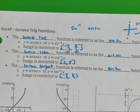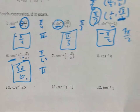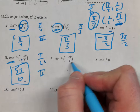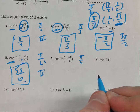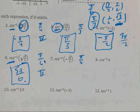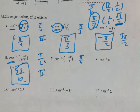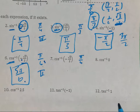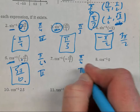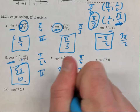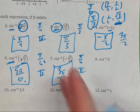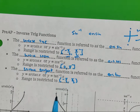Number seven: arc cosine of negative square root of two over two. Which family are you dealing with? Pi over four. Arc cosine comes out of quadrants one or two. Cosine is negative — where is cosine negative, quadrant one or two? Quadrant two. The pi-over-four family member in quadrant two is three pi over four. Three-fourths falls between zero and one, so that answer is great.